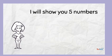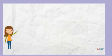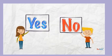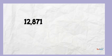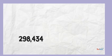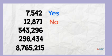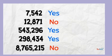I am going to show you some numbers and you are going to do the trick yourself, showing your teacher whether 2 is a factor or not. Hold up your YES or NO answer as soon as you think you know. Your teacher will pause the film until you answer. 7,542 — 12,871 — 543,296 — 298,434 — 8,765,215. If you answered: Yes, No, Yes, Yes, No — you've got it! Well done!